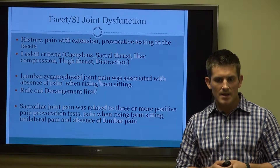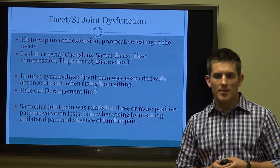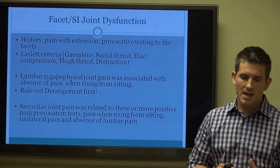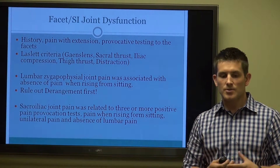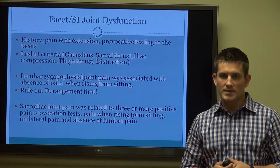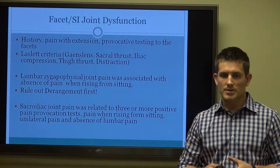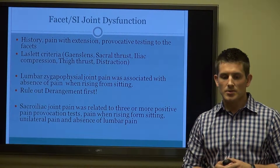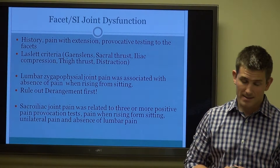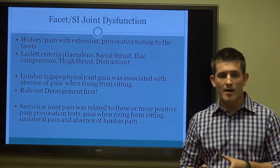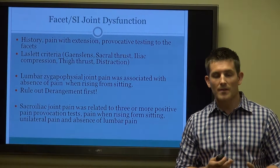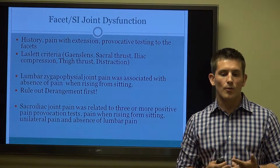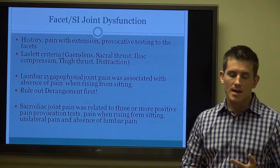The facets and SI joints can get a little complex. They're sometimes over-diagnosed and sometimes under-diagnosed. With the facets, we base it on patient history — pain with extension and provocative testing to the facets, like Kemp's exam or a facet loading test. For the SI joint, we use Laslett's criteria — three out of five positive exam findings on the five tests deemed best for the SI. That includes Gaenslen's, sacral thrust test, iliac compression, thigh thrust test, and distraction.